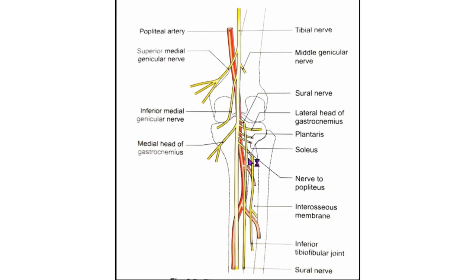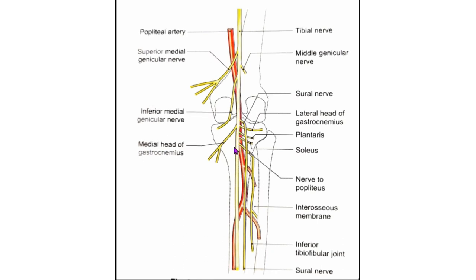The cutaneous nerve, also called the sural nerve, originates in the middle of the popliteal fossa and leaves at the inferior angle. It supplies the skin of the lower half of the back of the leg and the whole of the lateral border of the foot till the tip of the toe. The muscular branches arise in the distal part of the fossa for the lateral and medial heads of the gastrocnemius, the soleus muscle, the plantaris muscle and the popliteus muscle.